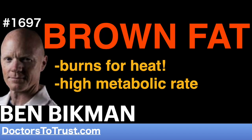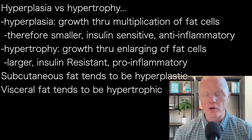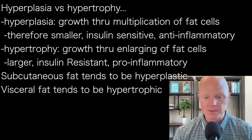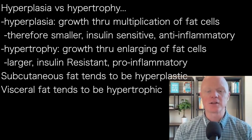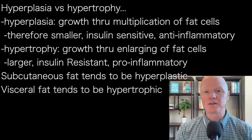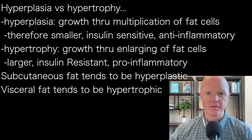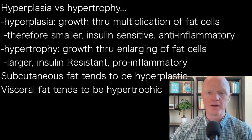If we store fat through hyperplasia, which is the production or multiplication of fat cells, then the fat cells are smaller. Even if they are more abundant, they are smaller. And smaller fat cells are insulin sensitive and healthy. They're anti-inflammatory fat cells as well.